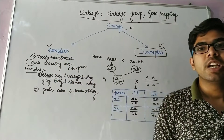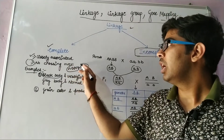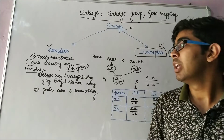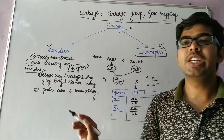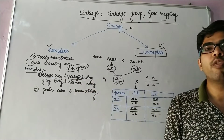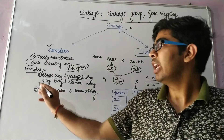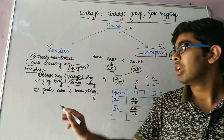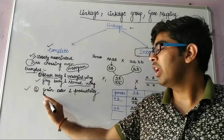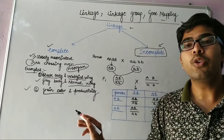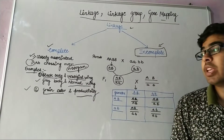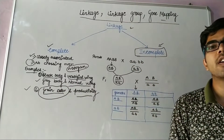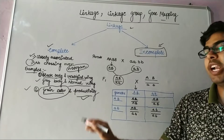Complete linkage was first discovered by Morgan in Drosophila melanogaster, also known as fruit fly. He found that the black body color encoding gene and the vestigial wing encoding gene are linked to each other. Similarly, he found that the gray body color is linked to the normal wing encoding genes. Another example is in rice, where the grain color encoding gene is linked with the productivity gene.